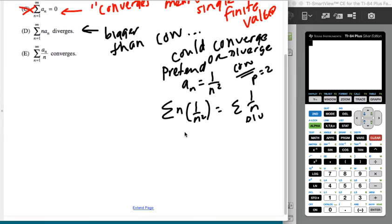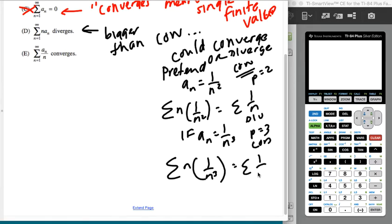But what if a sub n had been like one over n cubed, which also converges because it's a p series? Well, then n times that one over n cubed would be one over n squared, which converges. So I can't know that just multiplying by n makes it diverge, which lands me at e by default.